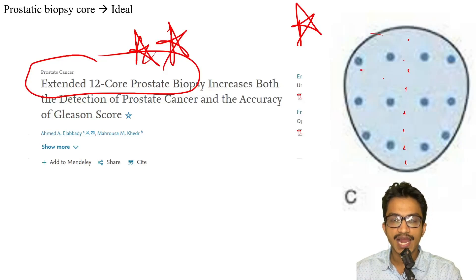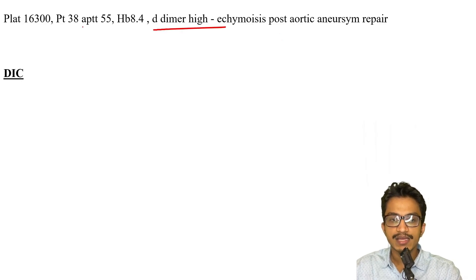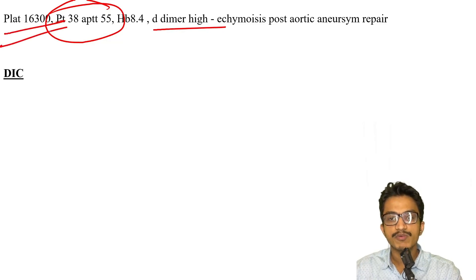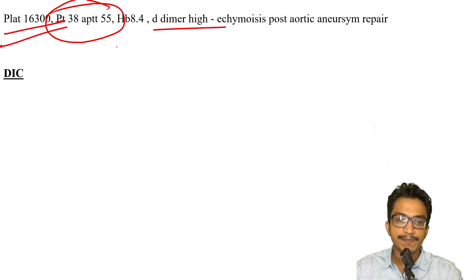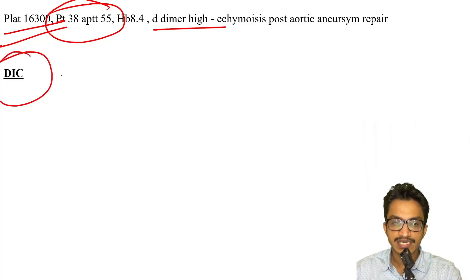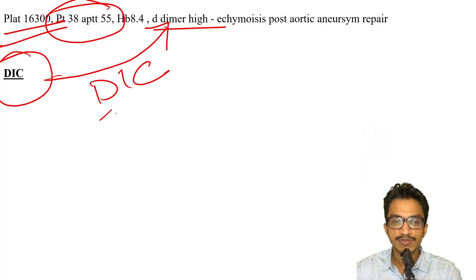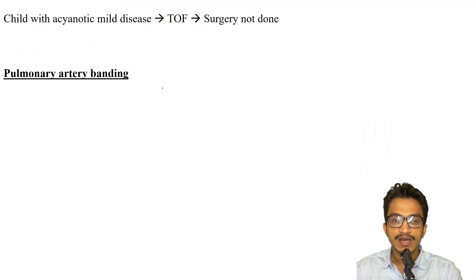For a patient post-aortic aneurysm repair with high D-dimer, borderline altered PT/aPTT, and severe thrombocytopenia: if heparin-induced thrombocytopenia is given as an option, that should be the answer; but if not, DIC is the best answer because D-dimer is also high.